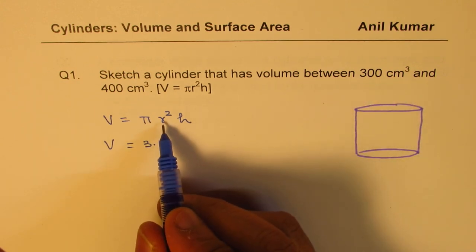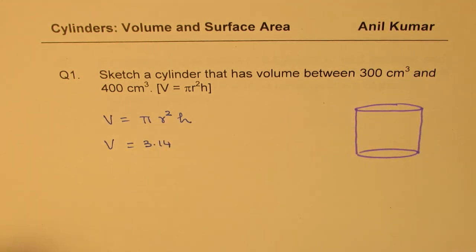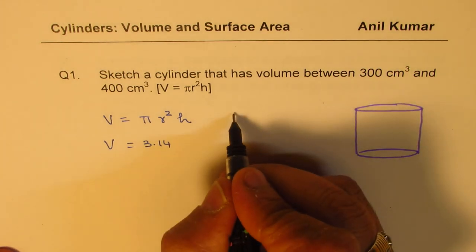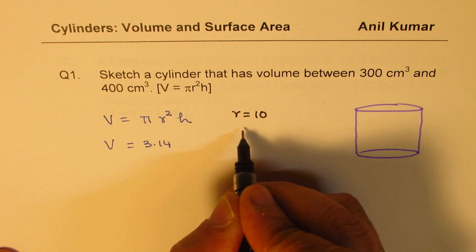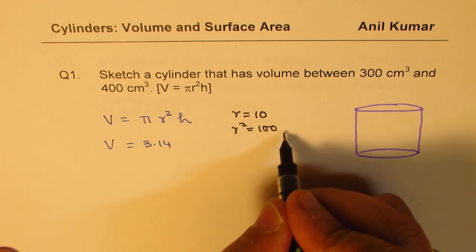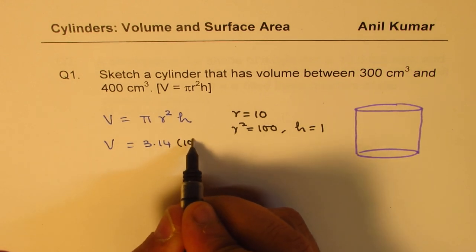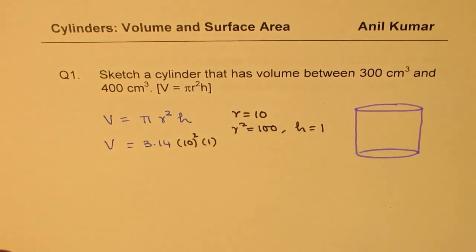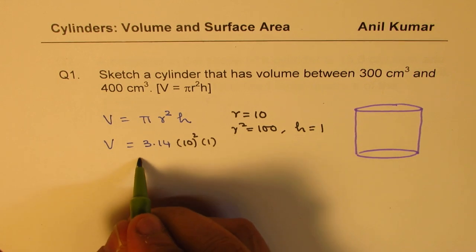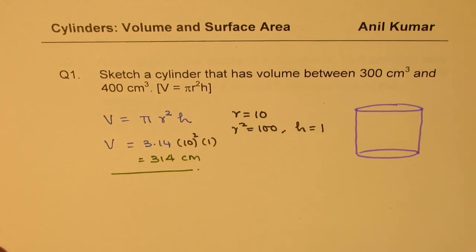So r squared and h could have any values so that we get 300. For example, if I take r as 10, then r squared will be 100. I just want to multiply this by 100, so I could have a height of 1 in this case. So I could have 10 squared times 1, and in this case we get a volume of 314 centimeter cube. So that could be one of the possible answers. It's an open question — you can get more than one answer.